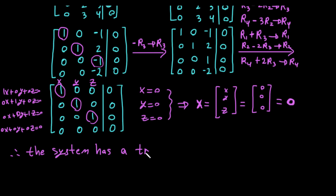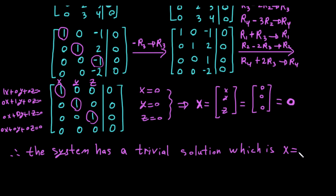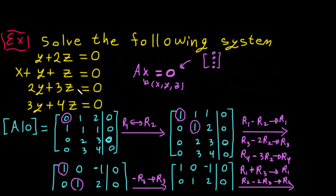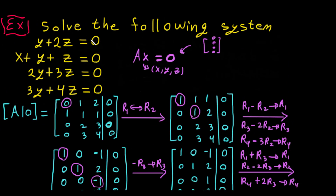The homogeneous system has two possible solutions: a unique solution or infinitely many solutions. Here we have a trivial solution because x = 0. If it were not equal to zero, we would have infinitely many solutions — that is called the non-trivial solution. So here we have a trivial solution, x = 0. Remember: a homogeneous system always has either a unique solution or infinitely many solutions.